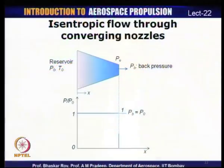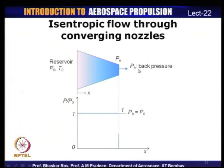The nozzle has flow entering through a reservoir at pressure P₀ and temperature T₀, exit pressure Pₑ, and back pressure Pᵦ — which we can change. Depending on the back pressure, the pressure across the nozzle also changes.